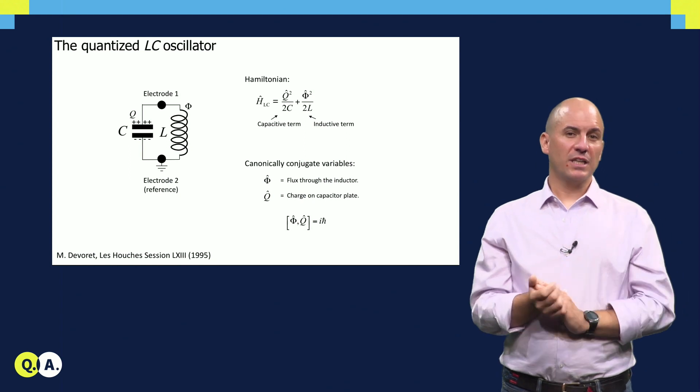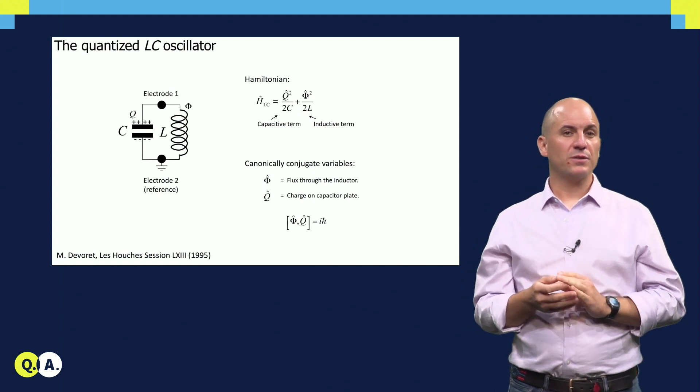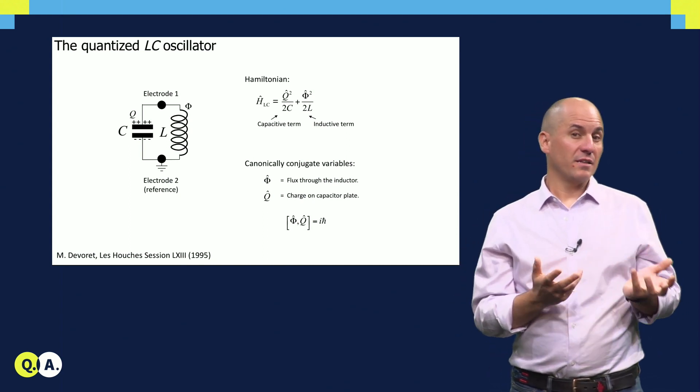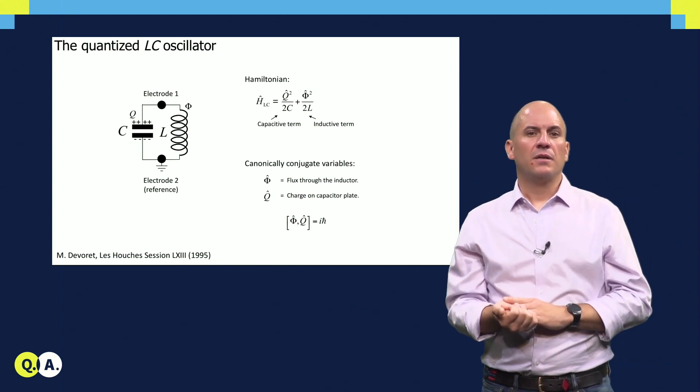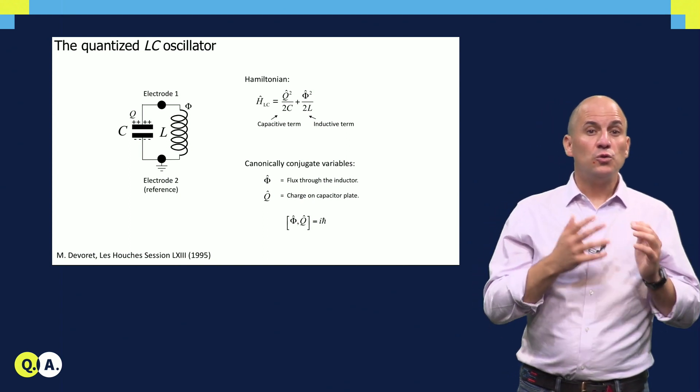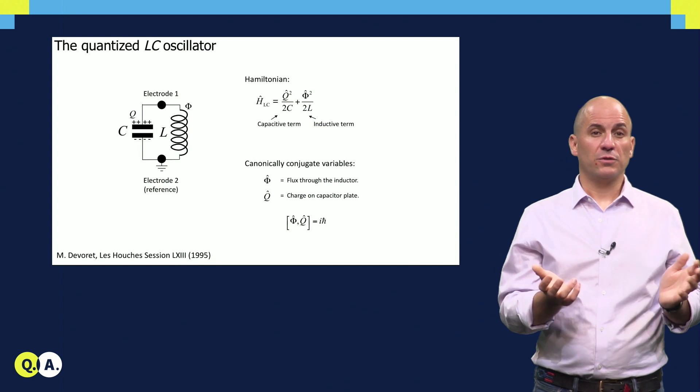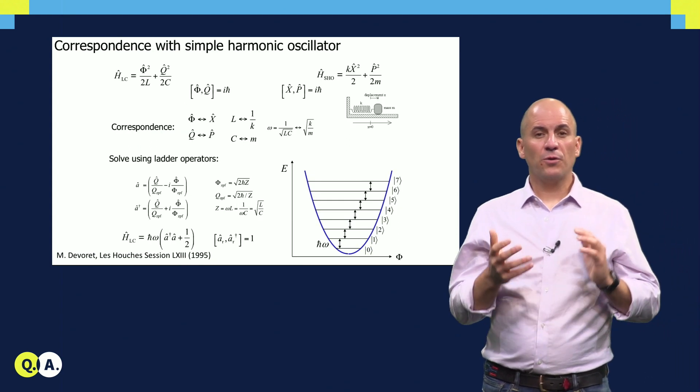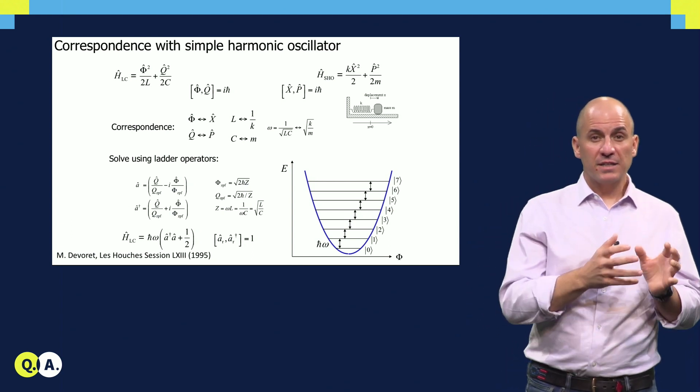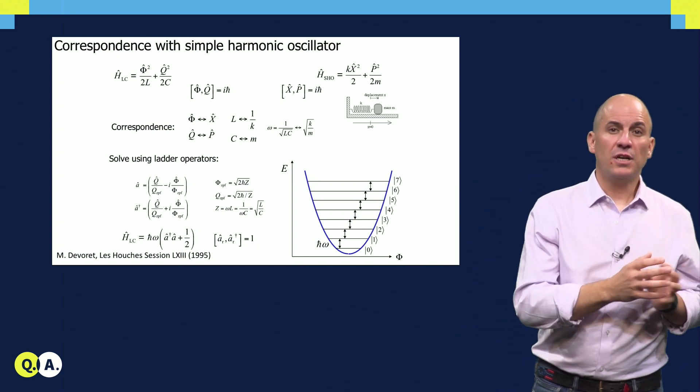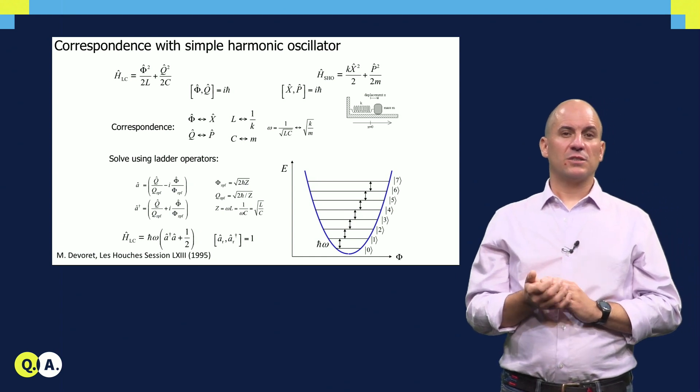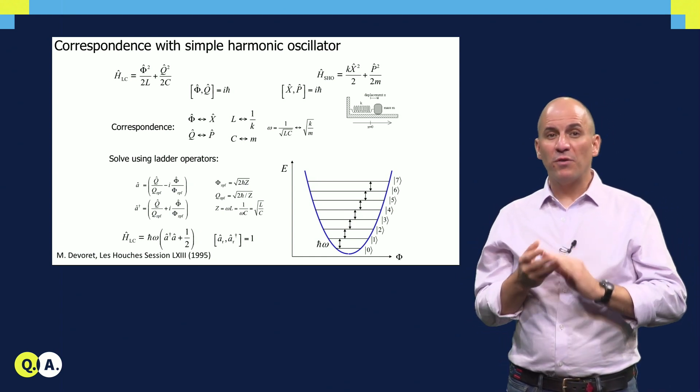The Hamiltonian for the LC oscillator consists of two terms that are each quadratic with respect to one variable. The capacitive term is quadratic on the charge accumulated on one island. The opposite charge is accumulated in the other. The inductive term is quadratic on the flux through the inductor. This charge and this flux do not commute. In fact, they are canonically conjugate variables. A direct correspondence between this Hamiltonian can be made to that of the simple harmonic oscillator by mapping flux to the position of the mass and charge to the mass's momentum.